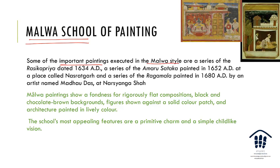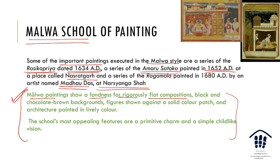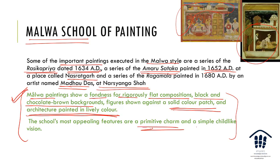The Malwa school's important paintings include a series from the Rasikapriya (1634) and a series of the Amarushataka painted in 1652 at Nasratkar, and Ragamala paintings by Madhav Nars. Malwa paintings show a fondness for rigorous flat compositions with black and chocolate backgrounds — if you see a chocolate background, recognize it quickly as Malwa. Paintings are shown against a solid color patch, architecture is painted in lively bright colors, and there is a primitive charm with a childlike vision.